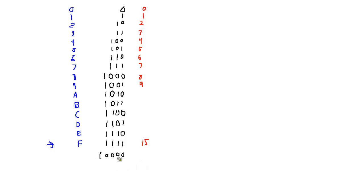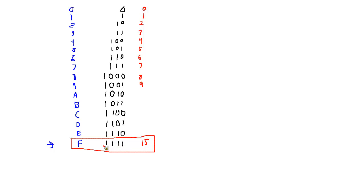F is exactly the largest number that I can represent in binary with 4 digits. Notice all these ones are turned on — 1, 1, 1, 1. When we add another one, we have to roll over and grab another digit out here. In binary to hex, there's this perfect pairing, and that's because 16 is a power of 2.